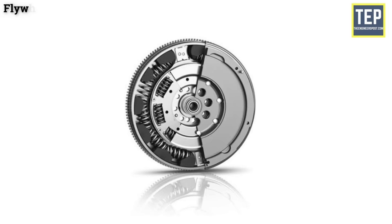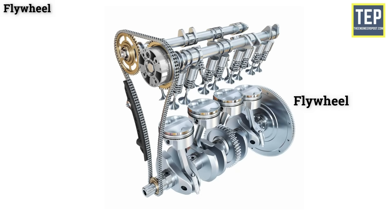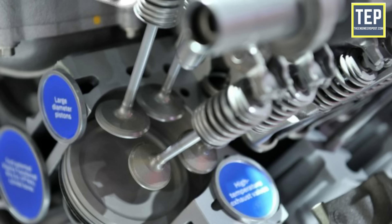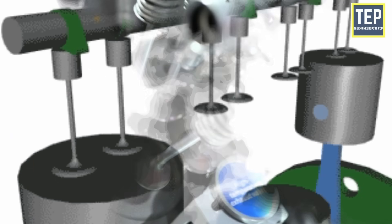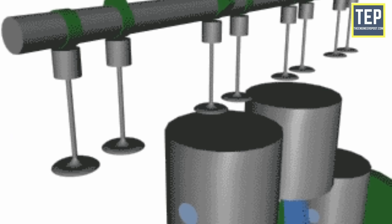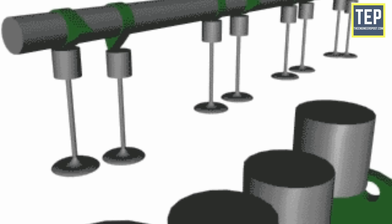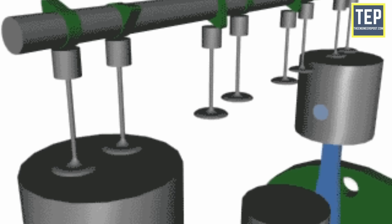The flywheel is used in the transmission system of a vehicle — a heavy steel wheel attached to the rear end of the crankshaft. Its size depends on the number of cylinders and the construction of the engine. The inertia of the flywheel tends to keep the crankshaft running at constant speed. Engine valves are essential to control the timing of the air-fuel mixture entry into the cylinder and combustion products out of the cylinders. They are located at the inlet and outlet openings of the engine cylinder and fit on valve seats in their closed position.